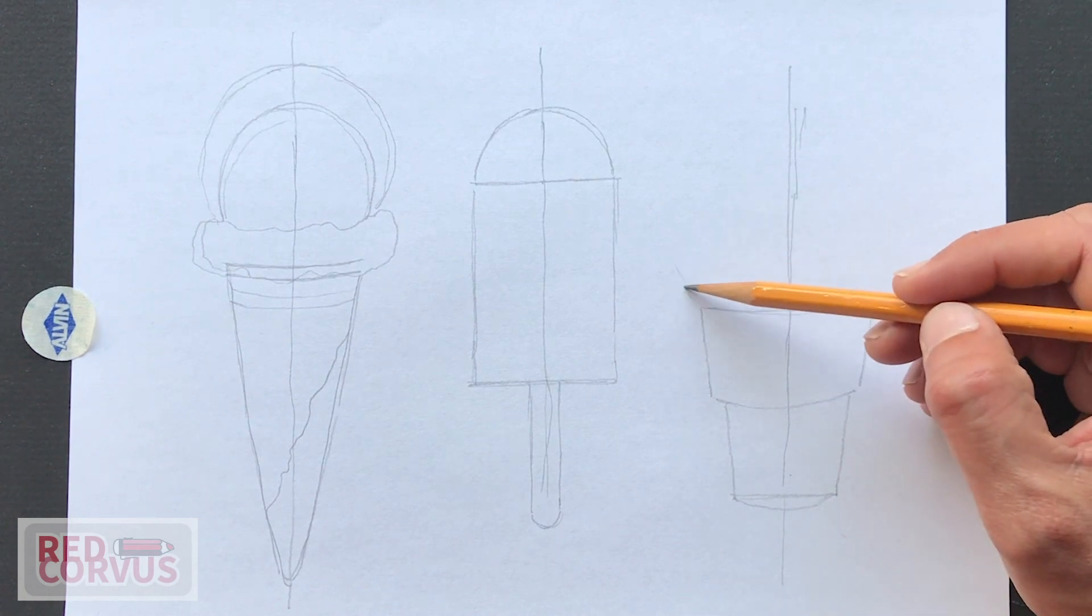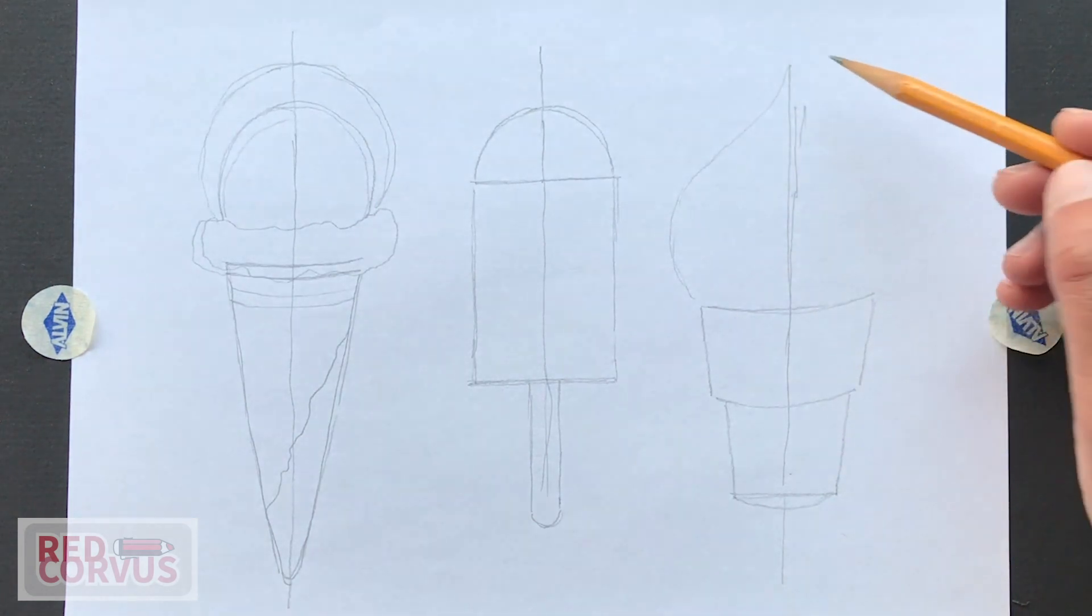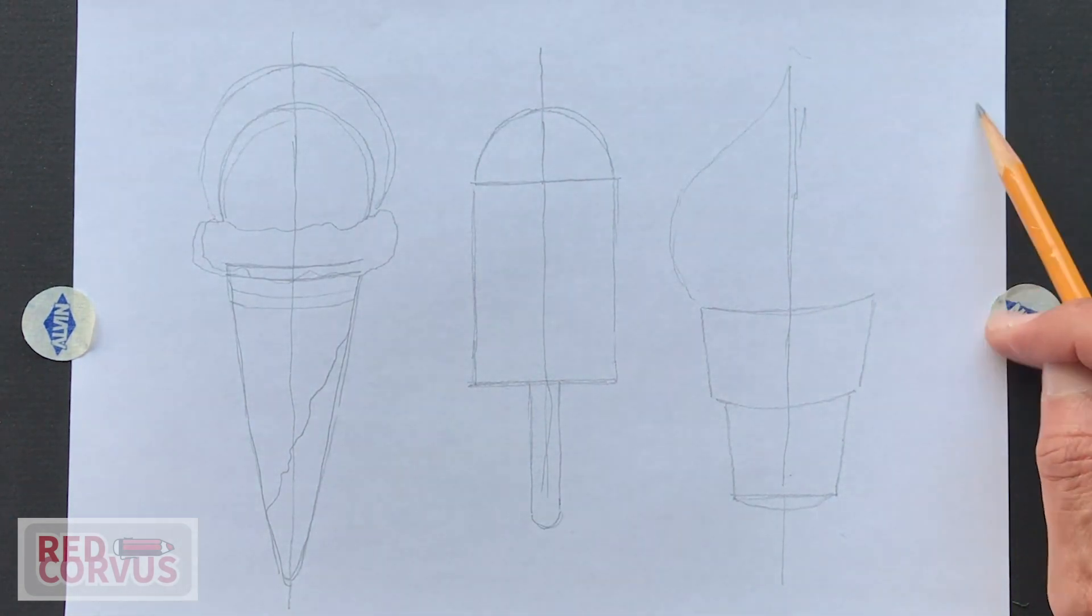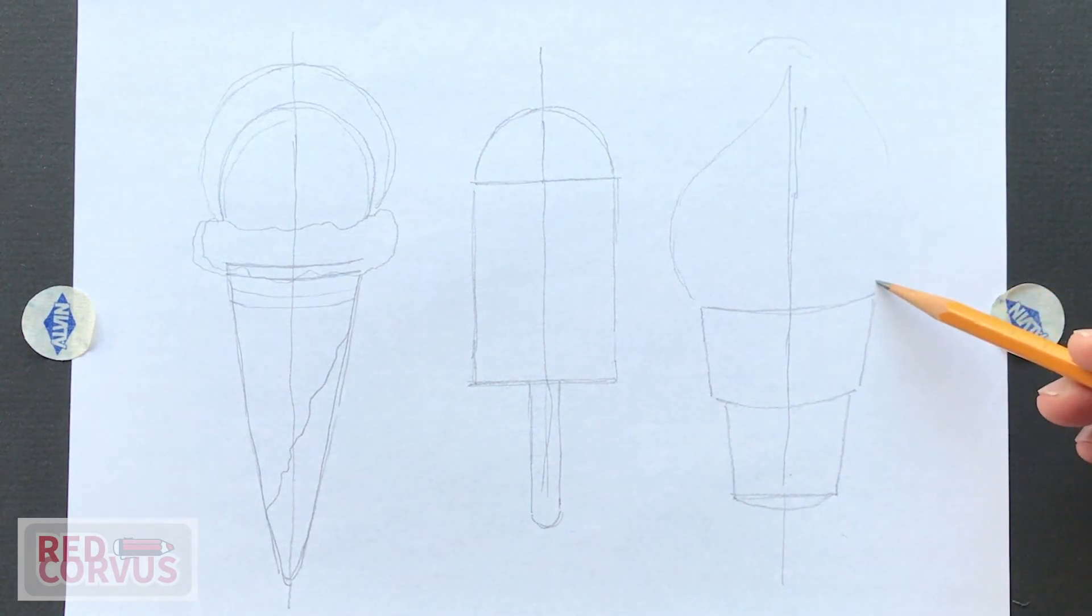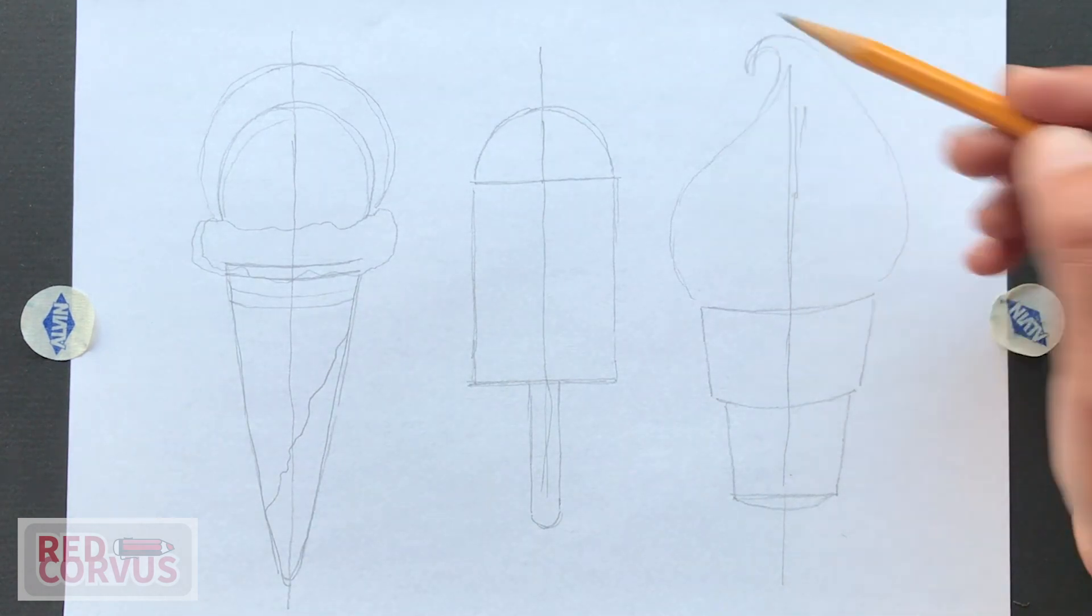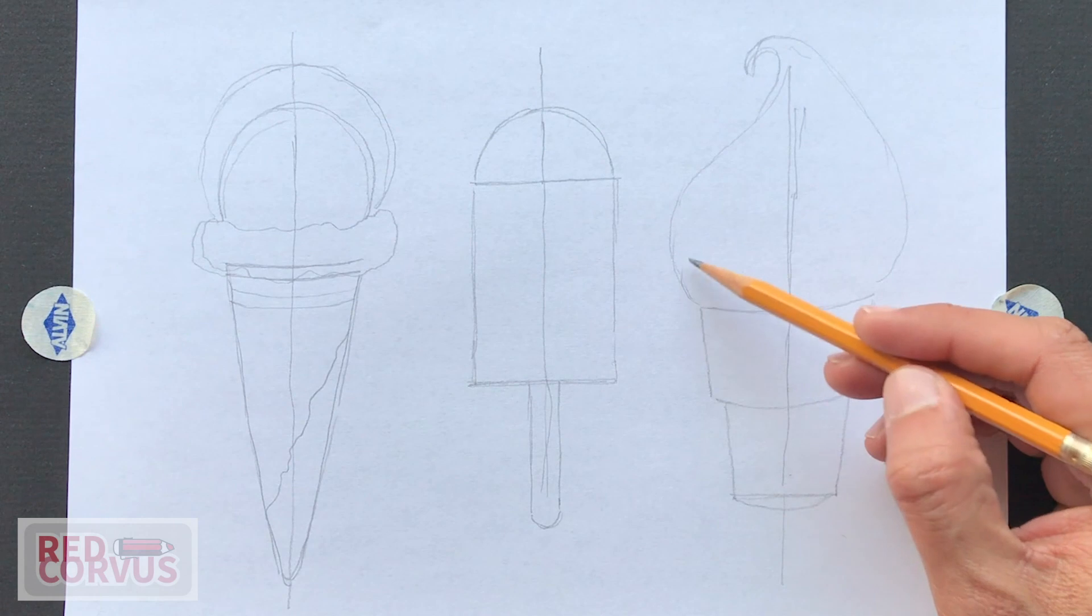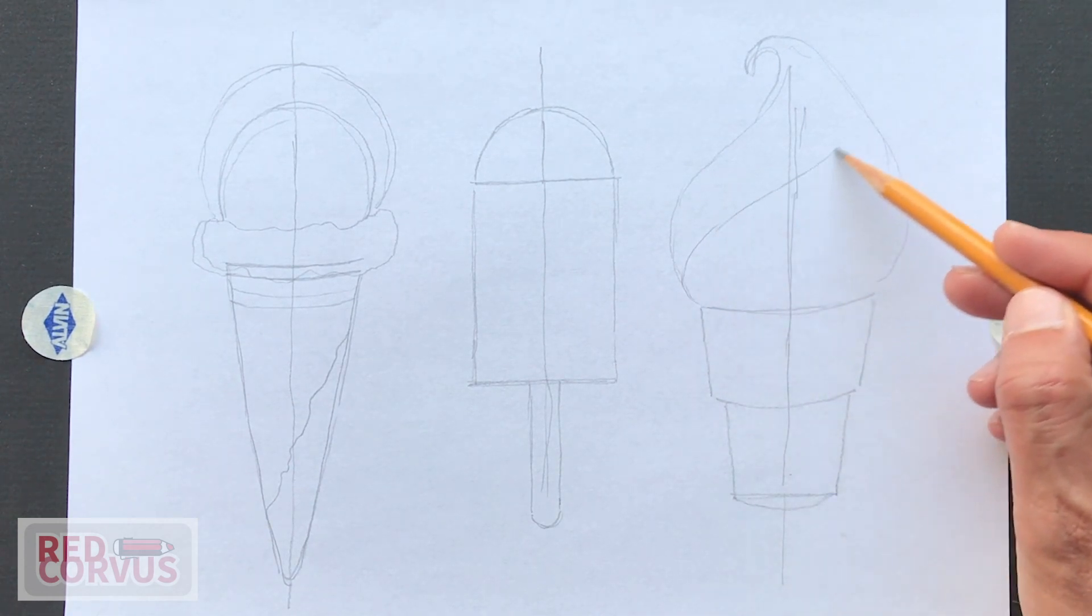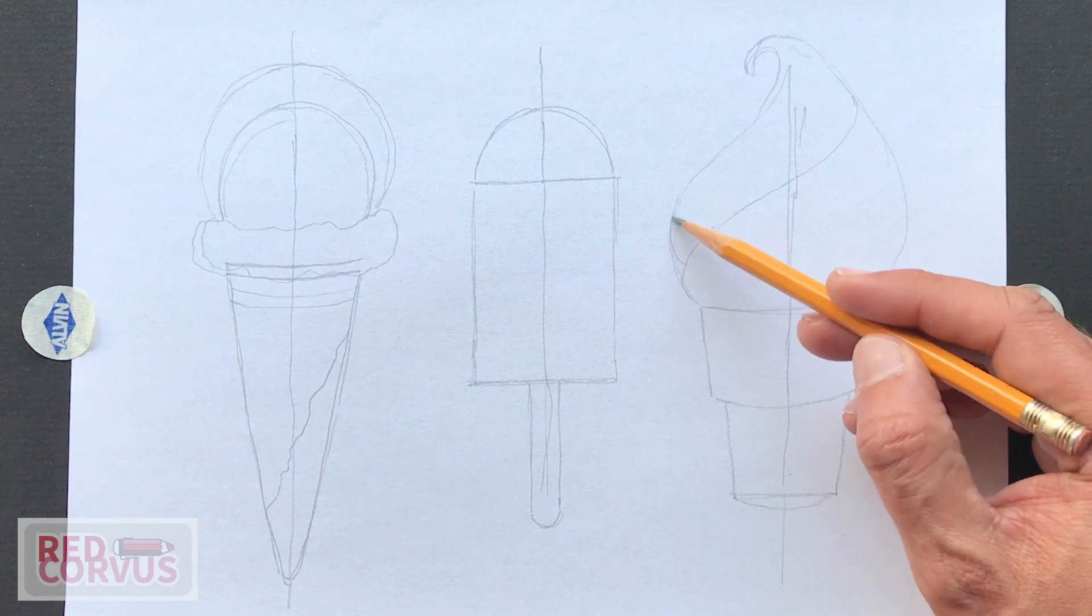And then I'm going to start with the overall shape of the ice cream. And once I have a shape I like, I'm going to subdivide it into different stripes. And each of these is a separate swirl.